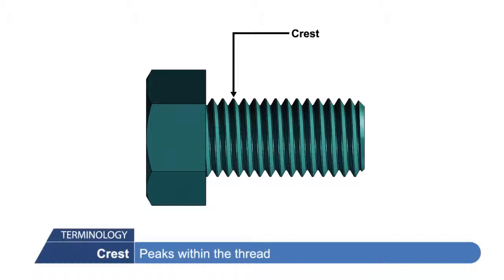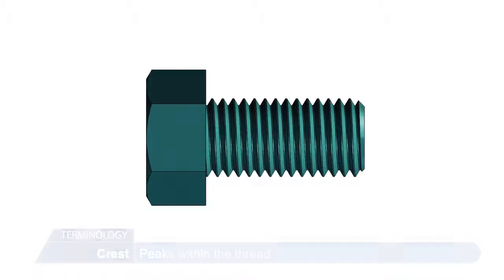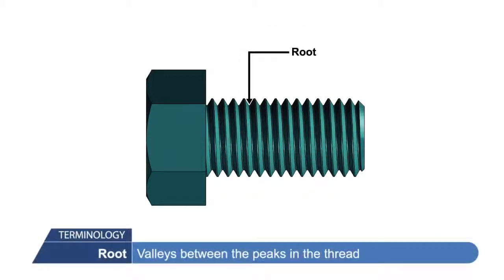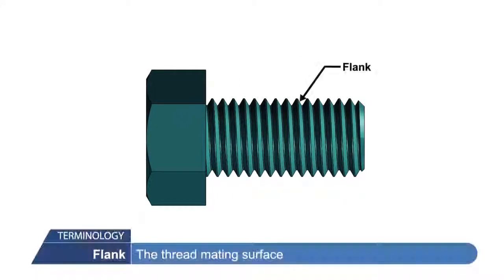Crest: peaks within the thread. Root: the valleys between the peaks within the thread. Flank: the thread mating surface.